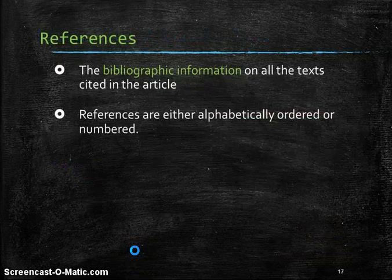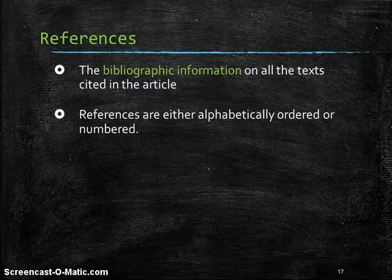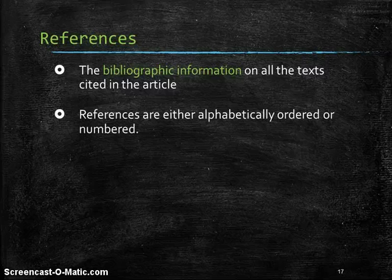Finally, we have our references, and that's all the bibliographic information. These are the texts that are cited in the article, and they can appear either alphabetically or numbered. Different journals do it in different ways. There's not one right way or one wrong way.